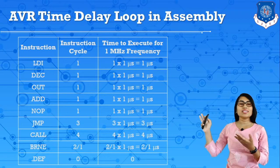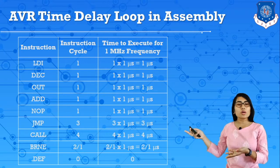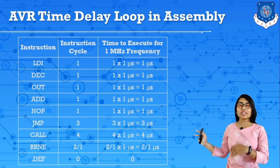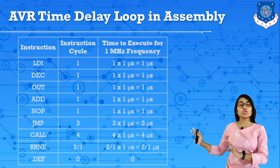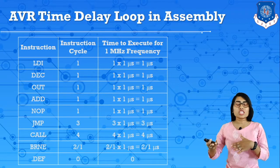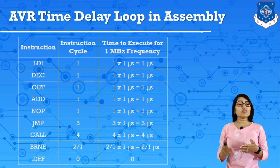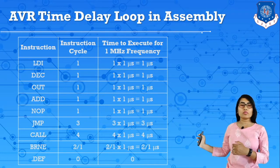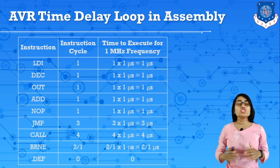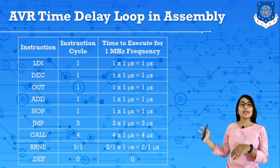LDI requires one machine cycle; decrement instructions require one machine cycle. Jump instructions require three machine cycles; CALL requires four machine cycles. Conditional branch (BRNE) instructions require two machine cycles if the condition is satisfied, or one machine cycle if the condition is not satisfied. Pseudo instructions do not generate any time calculations.